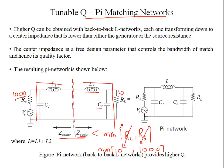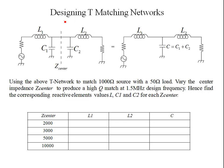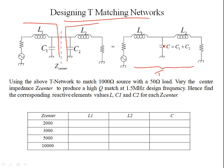So in the T network, Zcenter must be greater than Rs and RL. Let's take a design example: we have two front-to-front L networks; combining them produces a three-element T network where the shunt capacitor is the parallel combination of C1 and C2. The task is to design a T network to match a 1000 ohm source to a 50 ohm load.